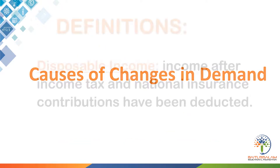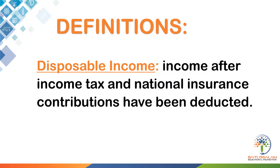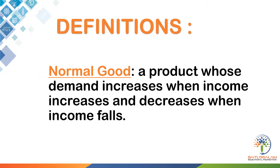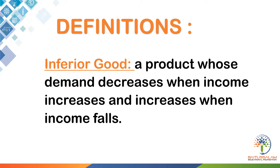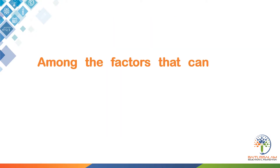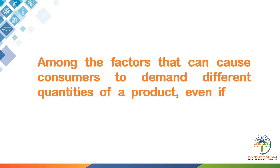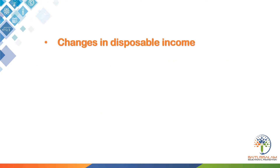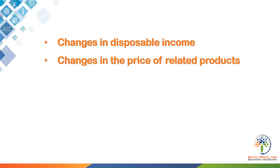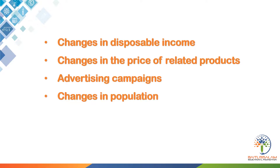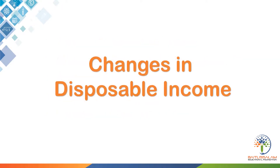Causes of changes in demand. Disposable income is income after income tax and national insurance contributions have been deducted. A normal good is a product whose demand increases when income increases and decreases when income falls. An inferior good is a product whose demand decreases when income increases and increases when income falls. Factors causing consumers to demand different quantities include: changes in disposable income, changes in the price of related products, advertising campaigns, changes in population, and changes in taste and fashion.